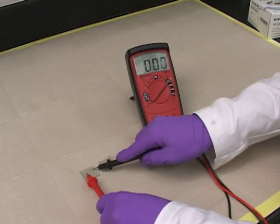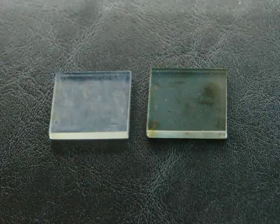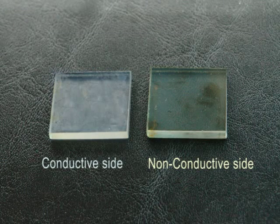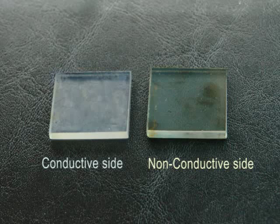There should be a slight visible difference between the conductive and non-conductive sides as well. The conductive side will appear bluish and cloudy, while the non-conductive side will appear clear and yellowish.